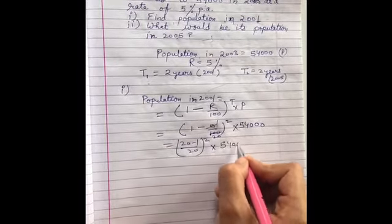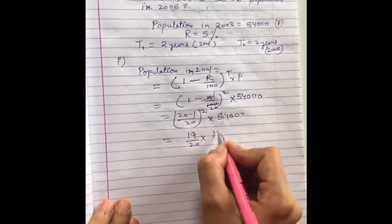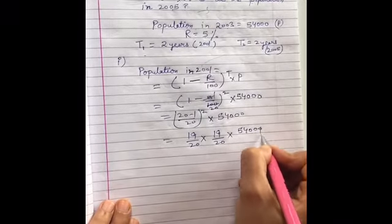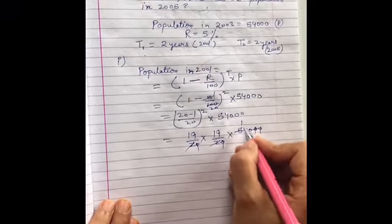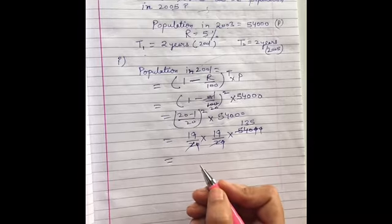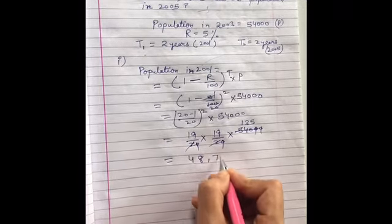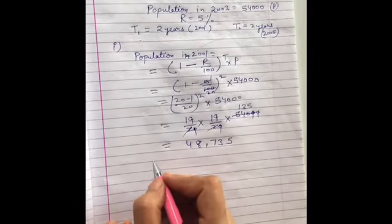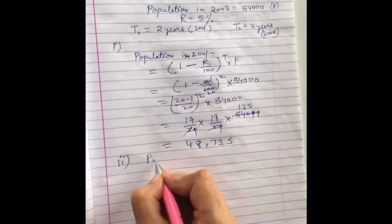So it will be 19/20 multiplied by 19/20 multiplied by 54,000. Zeros will be cancelled, it will be 4, ones of 4, 135. You multiply 19, 19, and 135, you will get 48,735. This is the population in 2001.